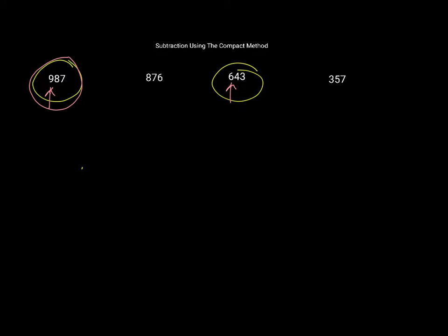So 987 subtract 643. I have units, tens, hundreds. 7 subtract 3 is 4. 80 subtract 40 is 40. And 900 subtract 600 is 300.